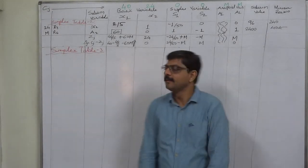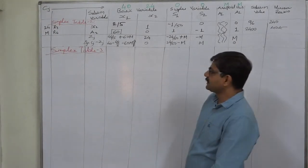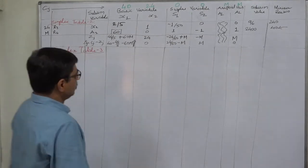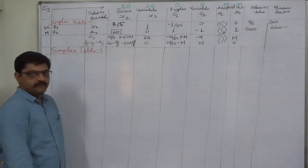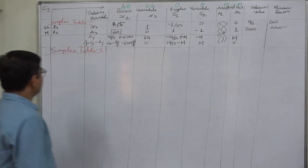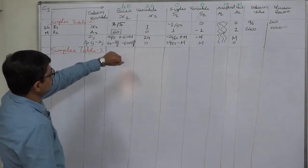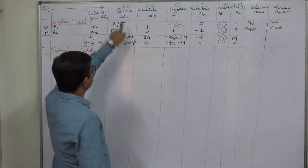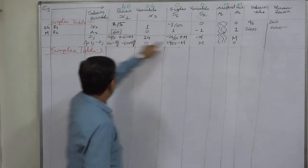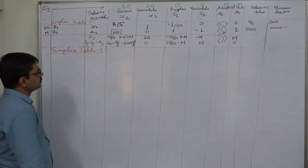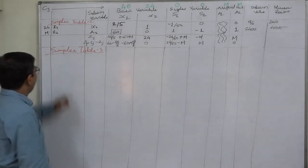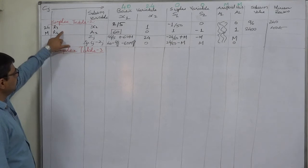Hello friends, welcome back. We have reached Simplex Table 3 of our linear programming problem, which we are solving through the Big M method. Simplex Table 2 is here; we had selected x1 as the key column, R4 as the key row, and 60 is our key element.